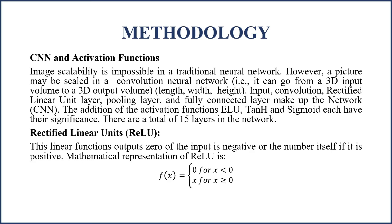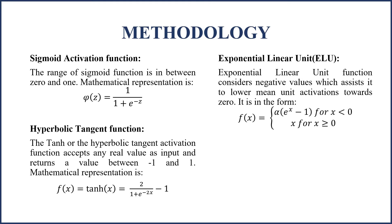The Rectified Linear Unit (ReLU) outputs 0 if the input is negative, or the number itself if it is positive. A model that implements it is quicker to train and generally produces higher performance, and thus it is used as a default in the CNN model. The Sigmoid activation function has a range between 0 and 1, represented by an S-shaped curve, and is used as the last step to categorize the input.